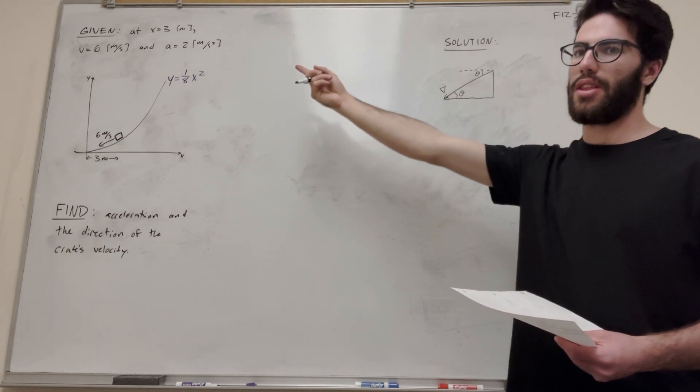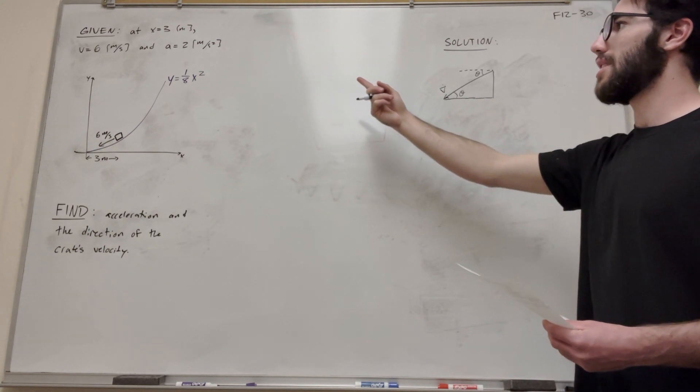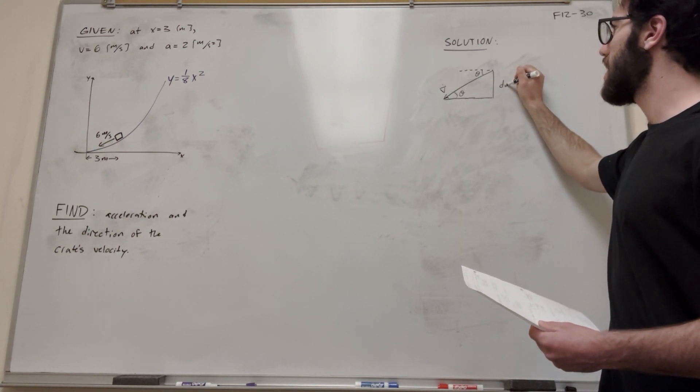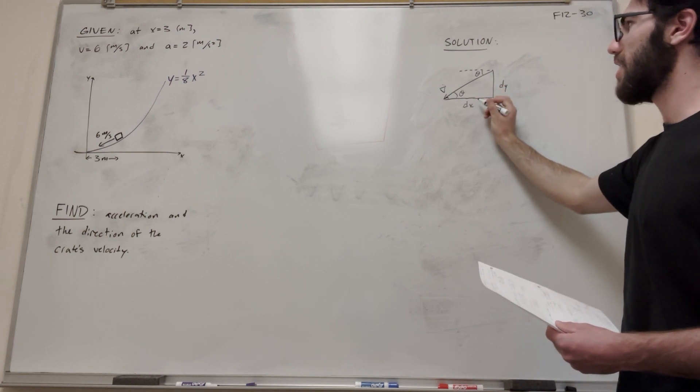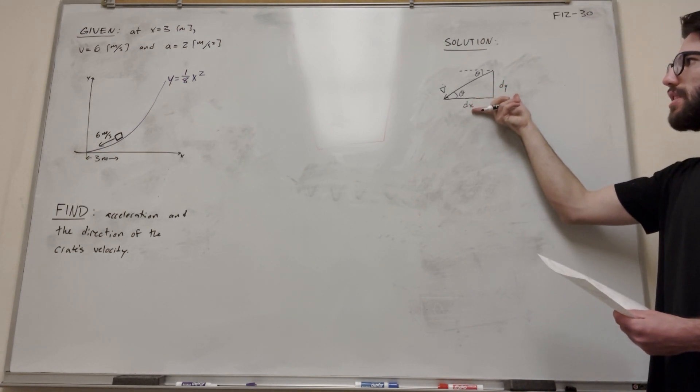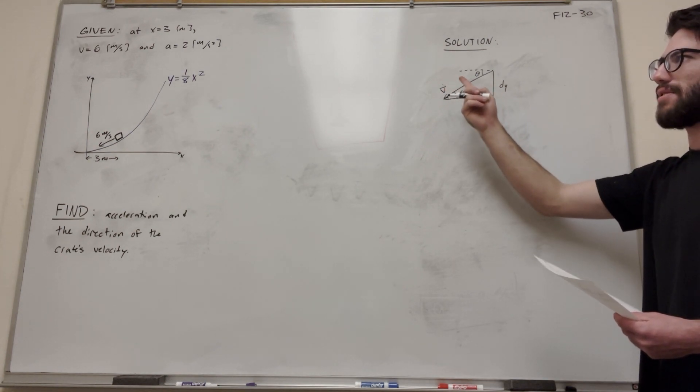We're taking it at the moment x equals 3 meters. So we can consider this dy as the change in vertical direction, and dx is the change in horizontal direction. And so if you make these two really small, we're going to find that exact velocity angle.